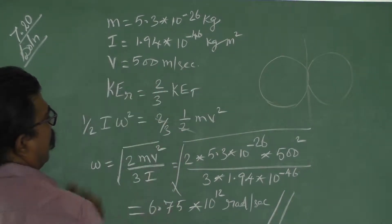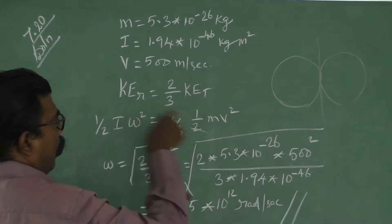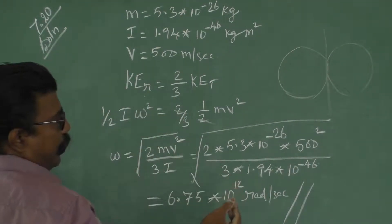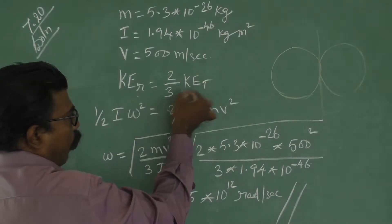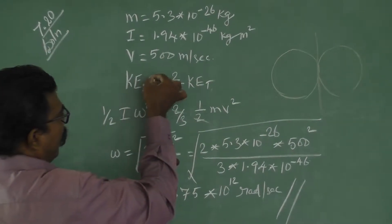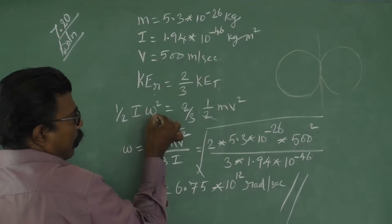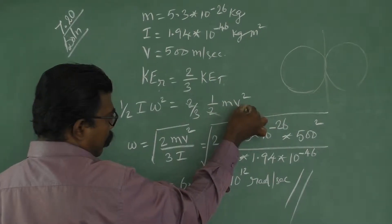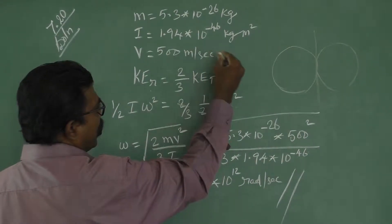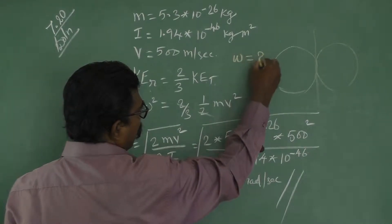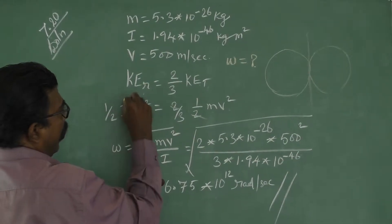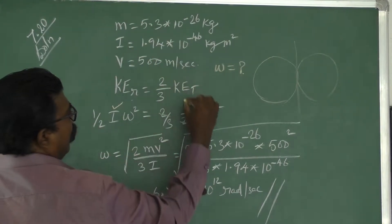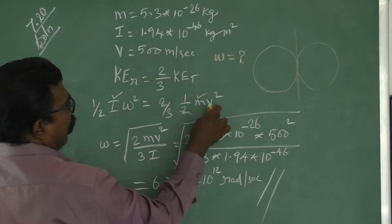Velocity is given as 500 m/s. Rotational kinetic energy is two-thirds of translational kinetic energy. Rotational kinetic energy is given by (1/2)Iω², and translational kinetic energy is given by (1/2)mv². Here, omega is what we need to find; I and m and v are all given.